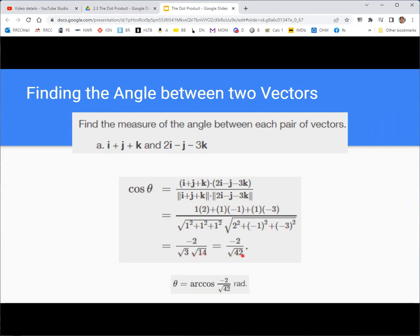And then multiply those and get square root of 42. And then I do the inverse cosine or arc cosine of that, and you get some number. Of course, it's going to be an irrational number, so we just leave it like that to keep it exact.